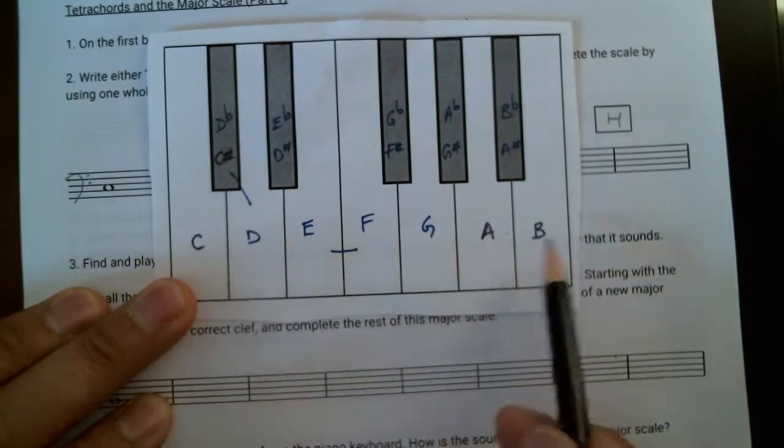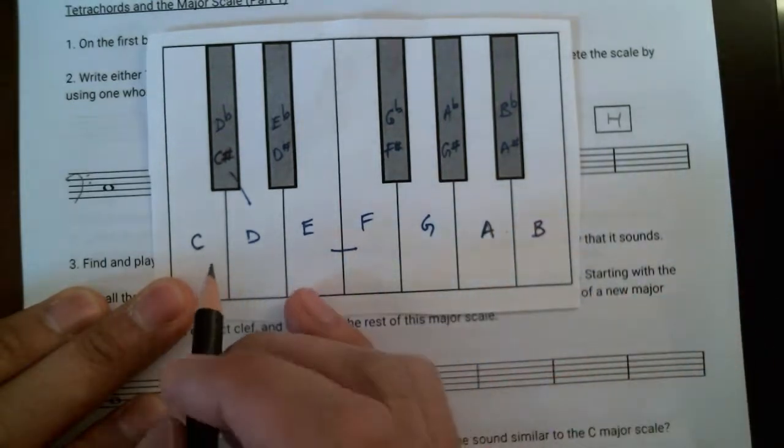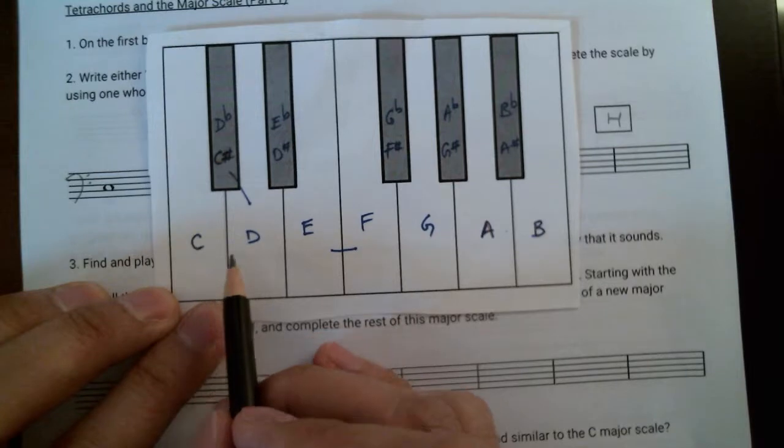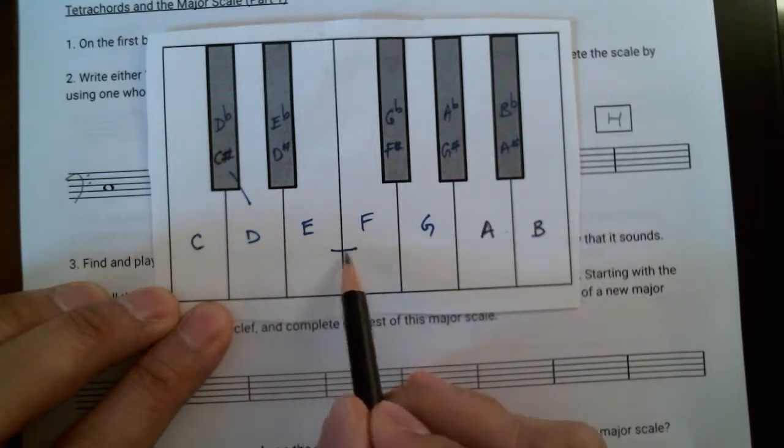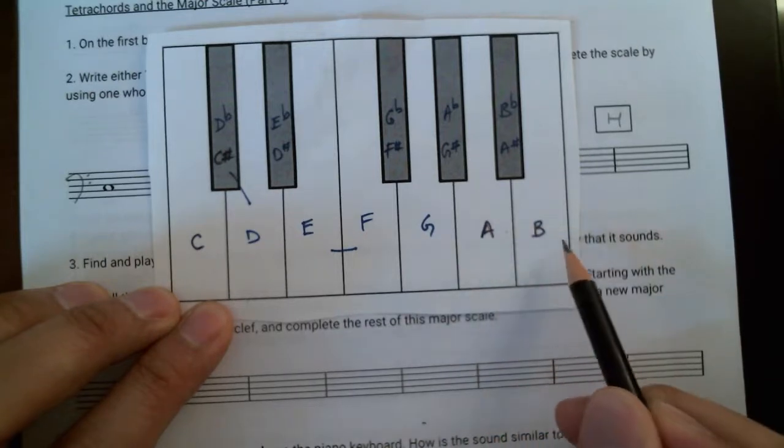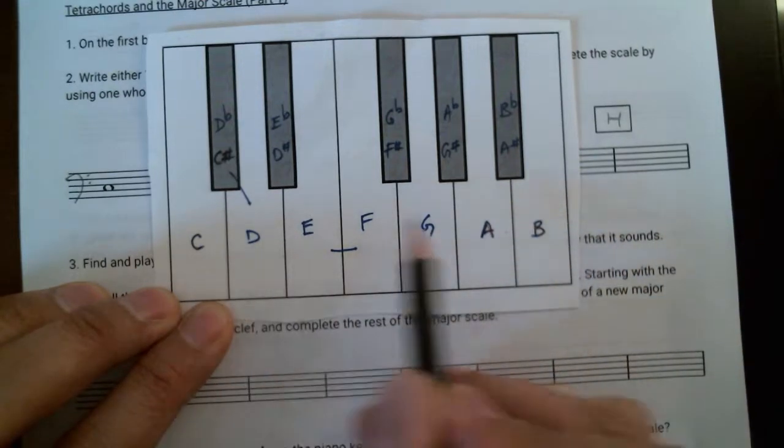And this pattern actually tells you that the pattern for the major scale is whole, whole, half. Notice that there's a half step between E and F, and then whole, whole, whole, half between B and C is the half step.